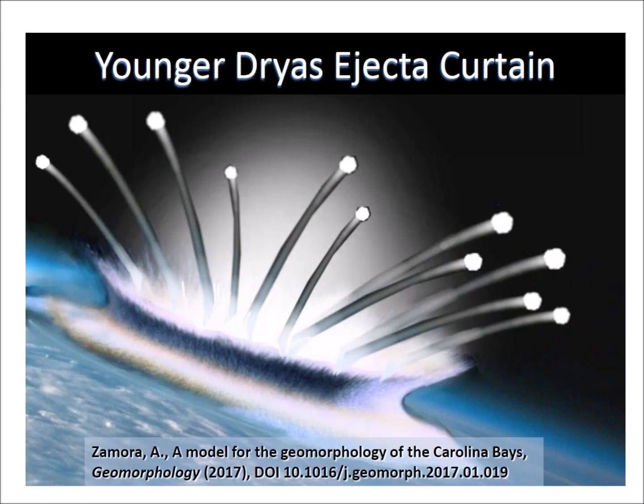The Glacier Ice Impact Hypothesis, published in 2017, proposes that an extraterrestrial impact on the Laurentide Ice Sheet ejected pieces of glacier ice in ballistic trajectories, and that the oblique impacts of the ice boulders created inclined conical cavities that transformed into shallow elliptical depressions known as the Carolina Bays and the Nebraska Rainwater Basins. Both of these geological features have similar geometry and they occur on saturated ground that was liquefied by the energetic impacts of the glacier ice boulders.